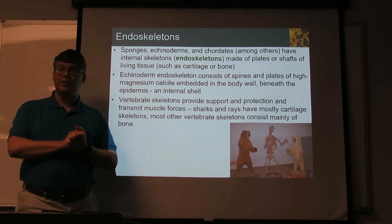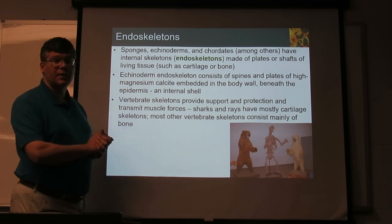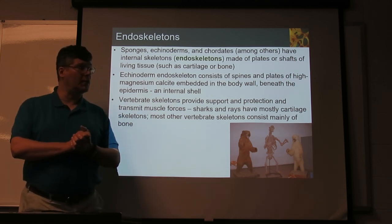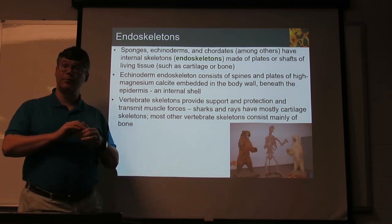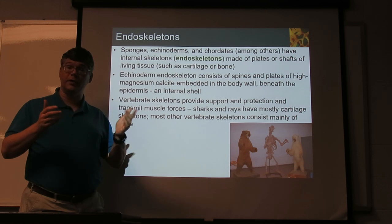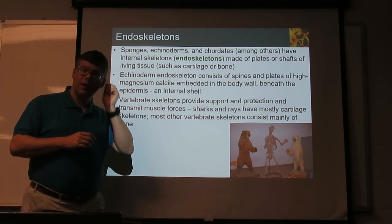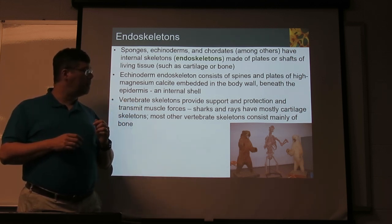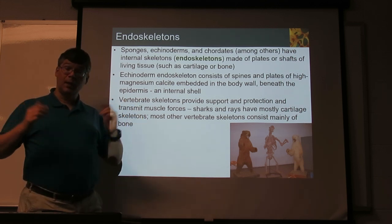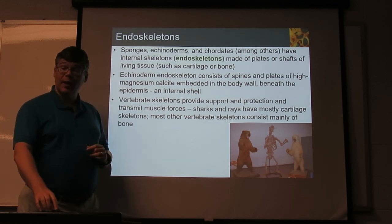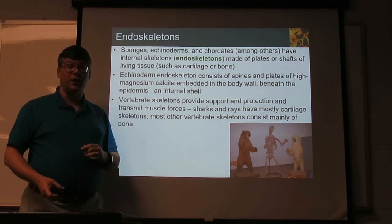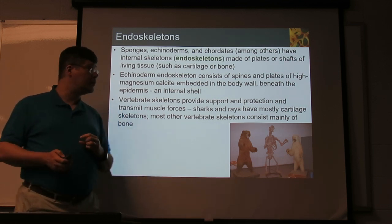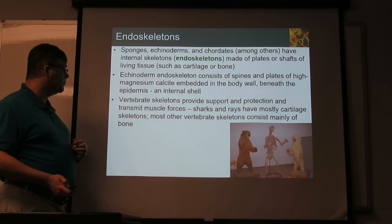Even within the chordates, we have some that are more bone, like ours, and some that depend more on cartilage. Of course, we have cartilage in our ears, but some have largely cartilage skeletons — sharks, for example. Their skeletons are mostly cartilage.